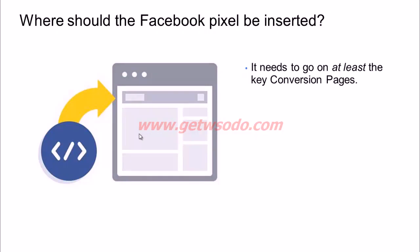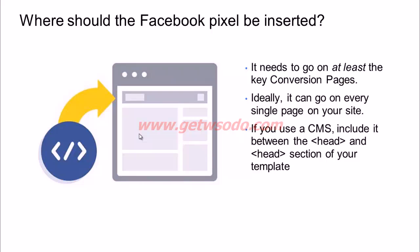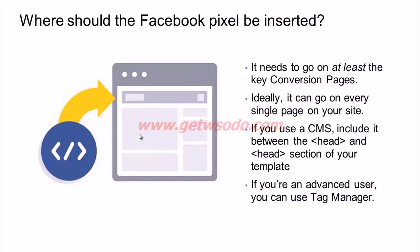Where should you have it inserted? Ideally you would have it on all pages, but at the least on all your conversion pages — all your thank you pages must have this code, that is the bare minimum. Ideally it should go on every page of your site, so you would tell your tech team to put it in the header on every page. If you use a content management system like WordPress, you can also add it yourself without needing much tech help. If you're an advanced user, you can also use tag manager to insert your pixel into your website.